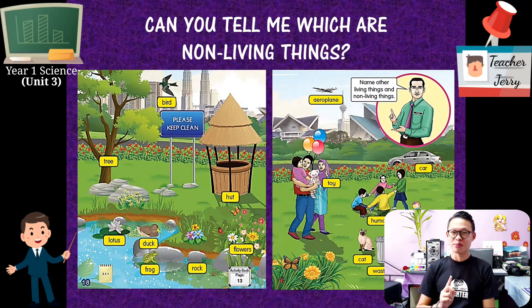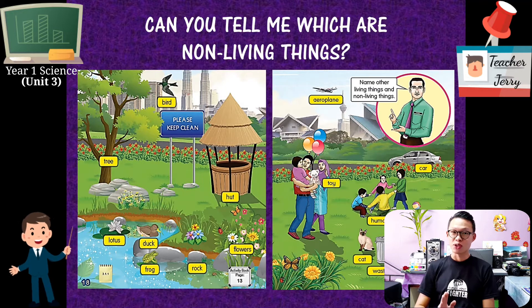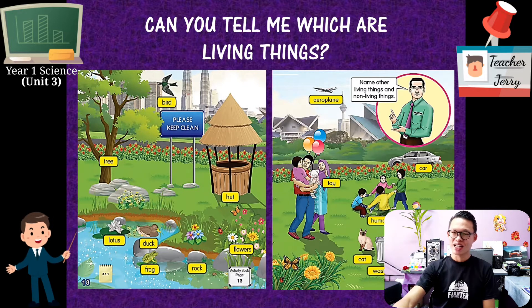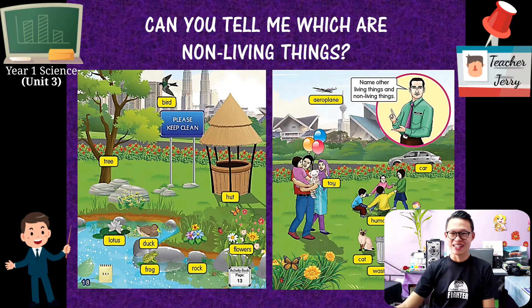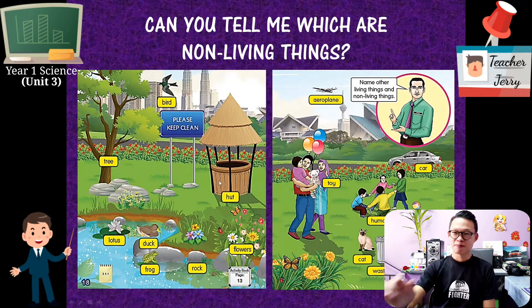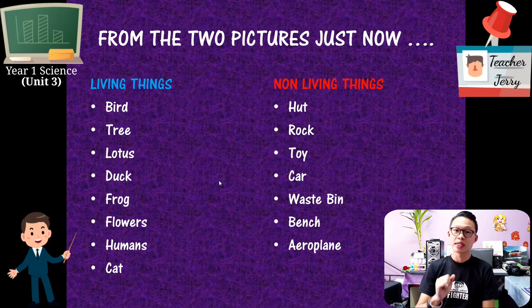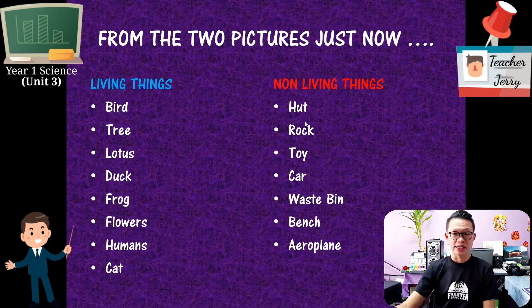First of all, let me translate. Living thing in Bahasa Melayu is 'Benda Hidup,' and non-living things in Bahasa Melayu is 'Benda Tidak Hidup.' Let's check which one is a living thing and which one is a non-living thing. Is a bird a living thing? Is a heart a living thing? Let's find out.